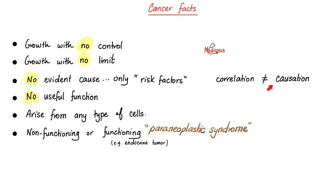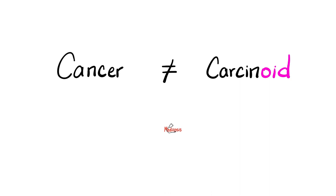Cancer can arise from any type of cell in your body. It could be non-functioning, i.e., non-secreting, or functioning, i.e., secreting — and those are called paraneoplastic syndromes. Please do not confuse cancer with carcinoid.